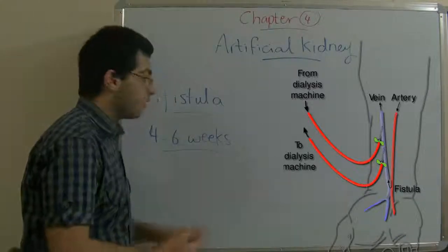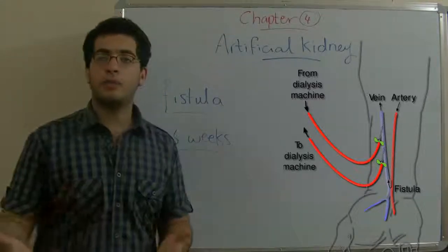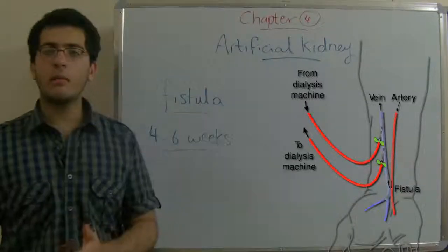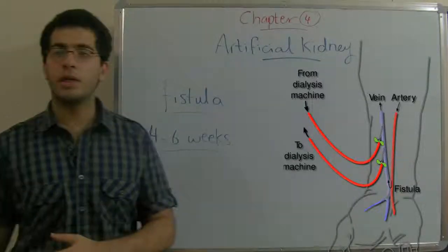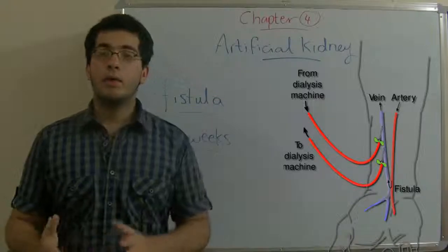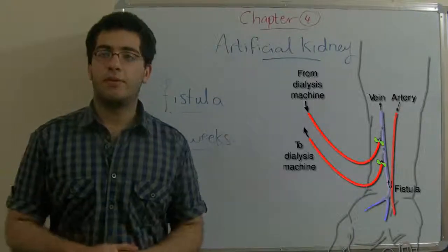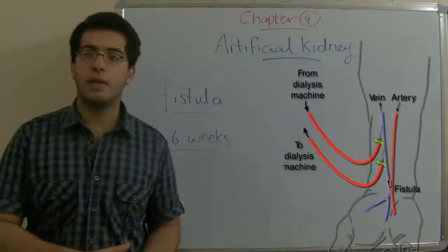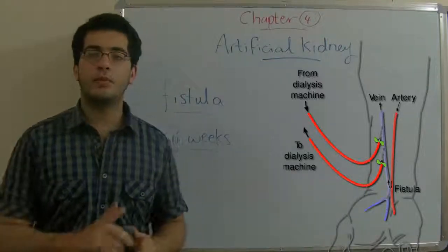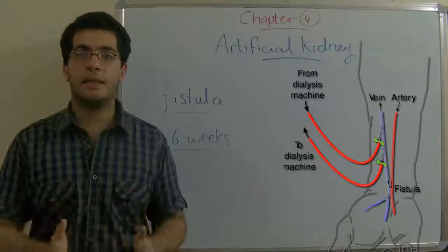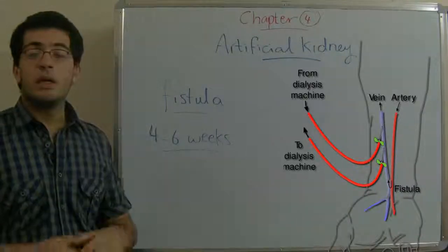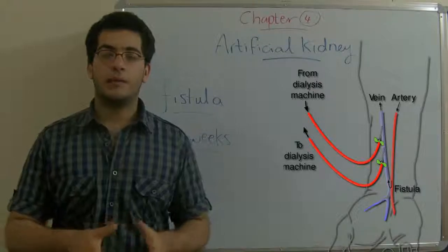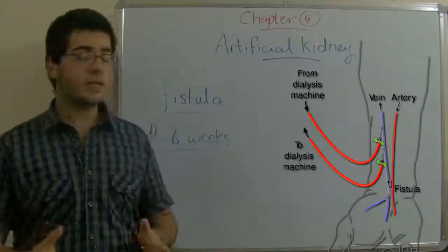The blood, as we know, is carried by the veins from the organs to the heart. As the blood passes through the vein coming from the organs, instead of going to the artery directly, it first passes through the first tube in the artificial kidney and enters the device of dialysis.